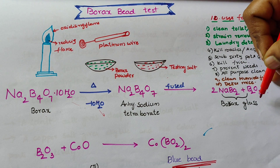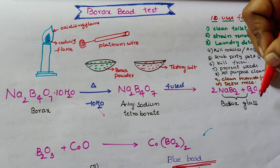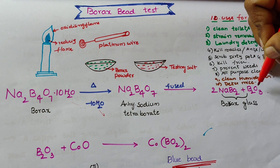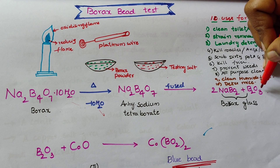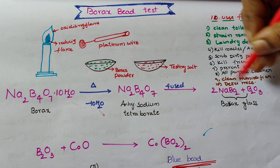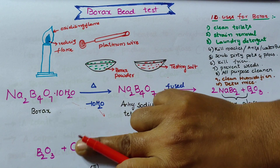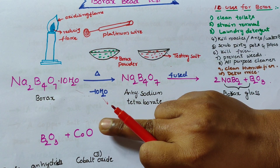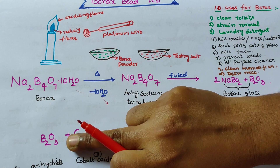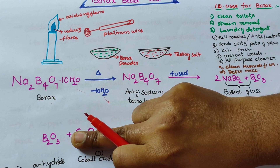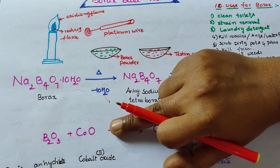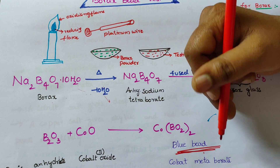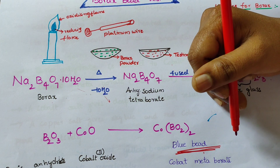The borax glass is in the glassy form. When B2O3, known as boric anhydride, reacts with any metal oxide — for example cobalt oxide — metal metaborates are formed.